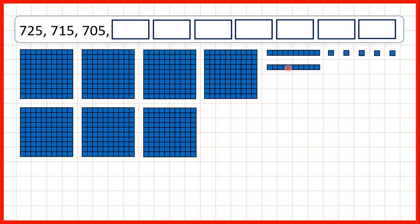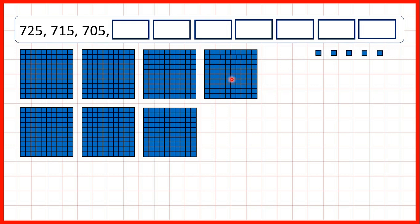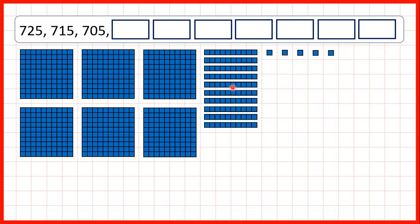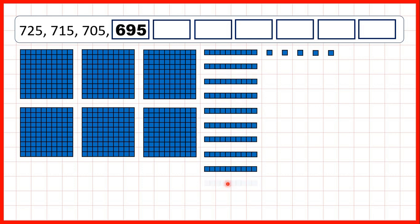Because we're counting back in tens, we need to take away one of these tens blocks each time. So then we have 715, then 705. But now we need to count back in tens, but we don't have any tens blocks to take away. So what we can do is exchange one of our hundreds for 10 tens, and then when we take one away, we get 695, because we've now got 6 hundreds, 9 tens and 5 ones.